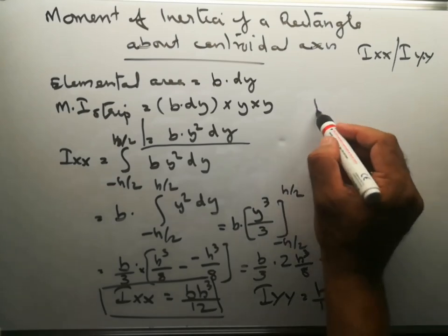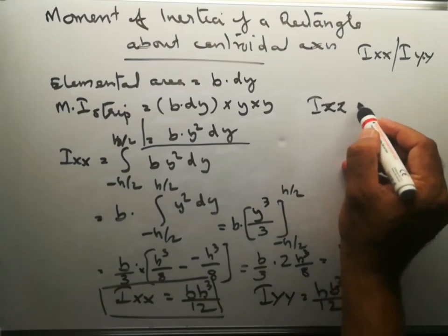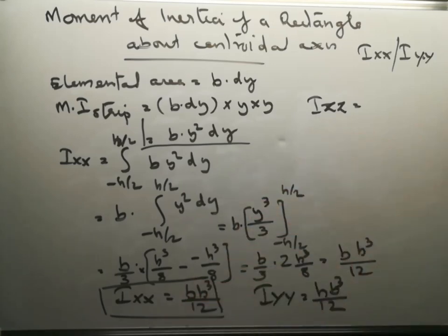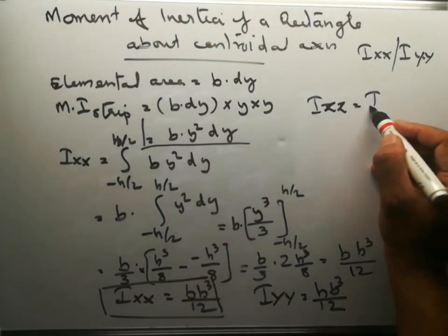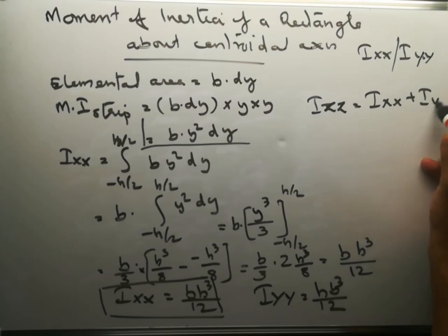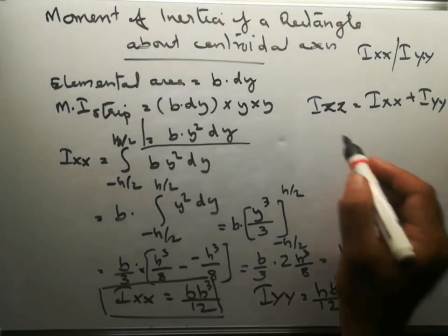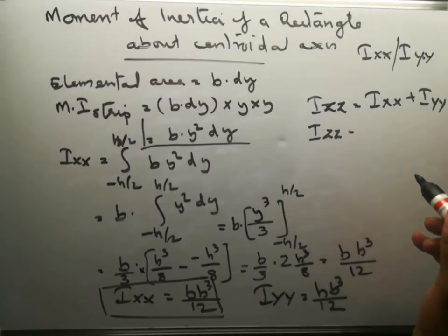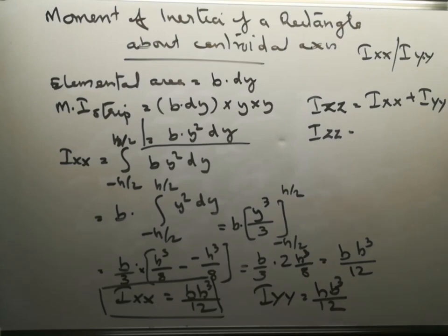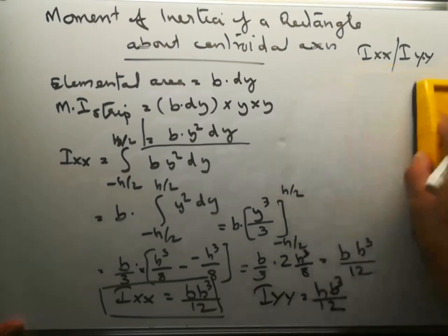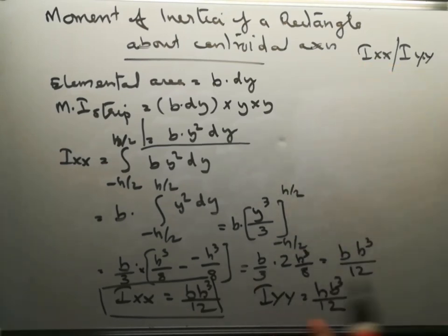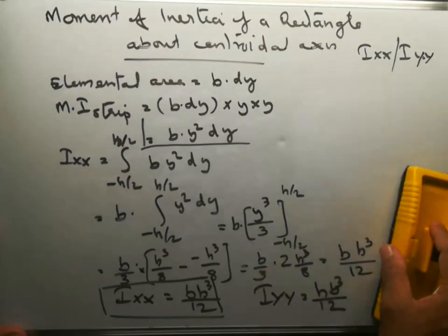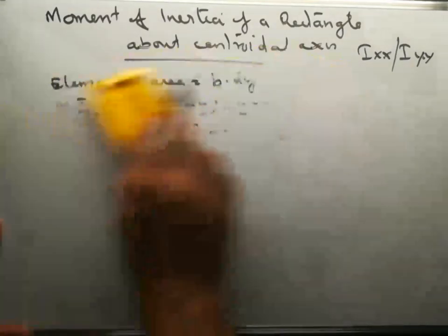Then, Izz is equal to, as per the perpendicular axis theorem, Ixx plus Iyy. Therefore, Izz equals Ixx plus Iyy. Those are the equations for Ixx and Iyy.